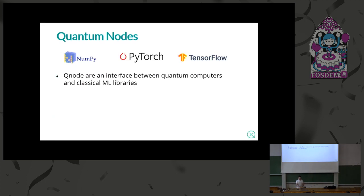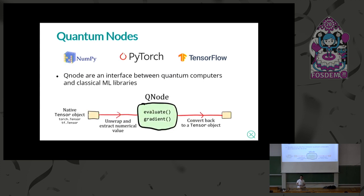PennyLane supports three main interfaces: NumPy, PyTorch, and TensorFlow. It accepts tensor objects from these frameworks — NumPy Autograd ArrayBox, Torch tensors, or TensorFlow tensors. When evaluating the quantum portion of a computation, we unwrap and extract the numerical value, evaluate it, use our internal architecture to evaluate the gradient, convert it back to a tensor object, and pass on the gradient information to the machine learning framework. This is how the entire thing becomes end-to-end differentiable even with a mixture of quantum and classical hardware.